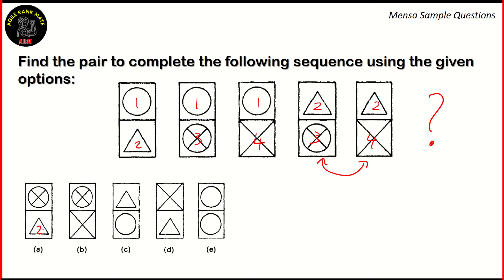Option A has the triangle, which is incorrect. Option C has the triangle and the clear circle, which is incorrect. Option D has a triangle — that's incorrect. Option E has the same figure on both sides, which is also incorrect. The right answer is option B. In option B, you have figures three and four as a pair, and that pair will complete the following sequence. So option B turns out to be the right option.